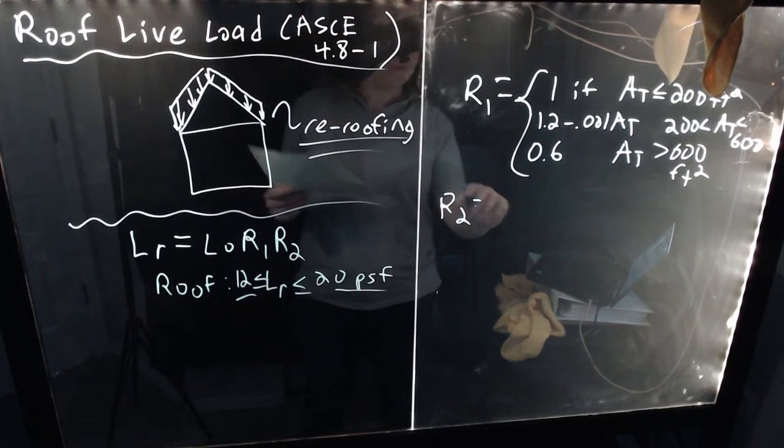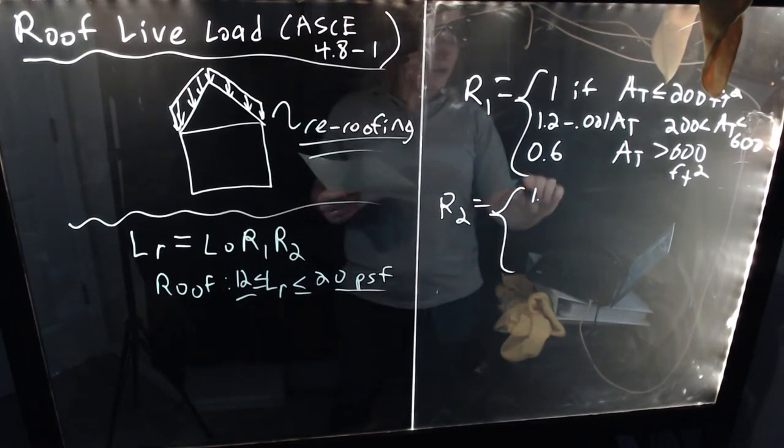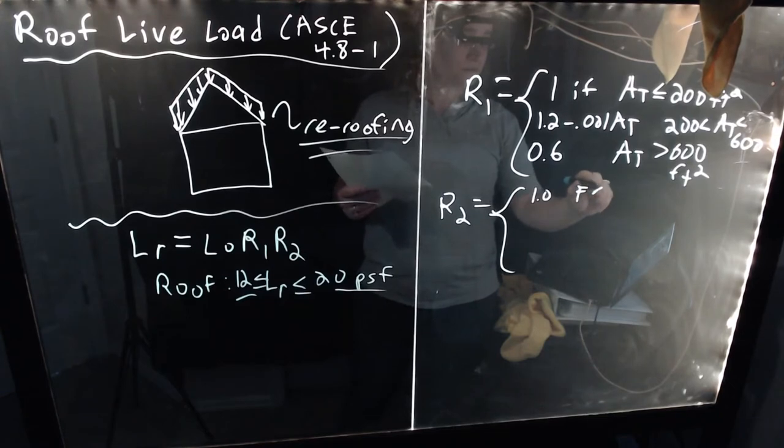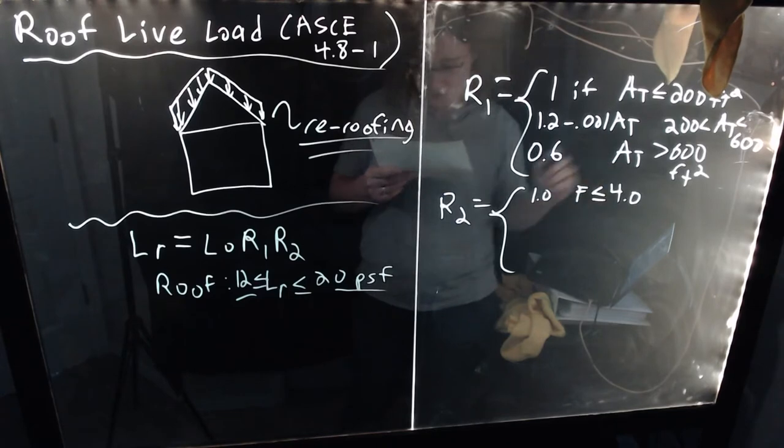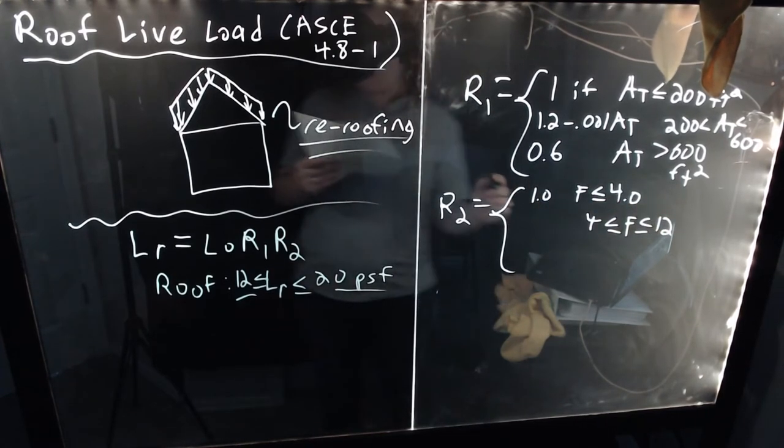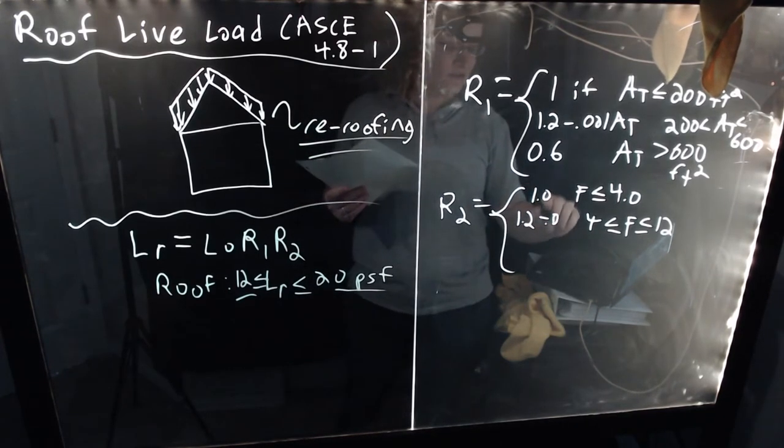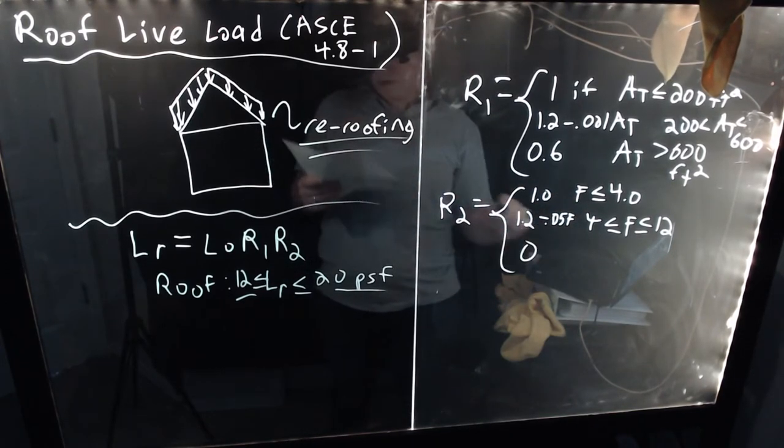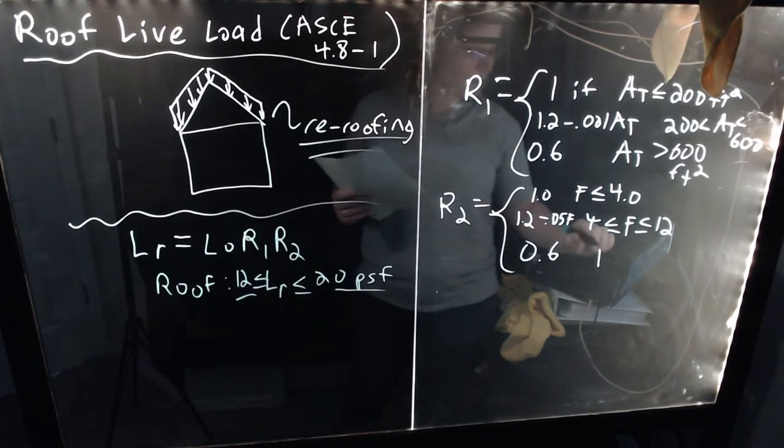Then R2 is just another piecewise function. And it's going to be 1.0 if F, and we will define F, if parameter F is less than 4.0, if F is between 4 and 12, then this will be equal to 1.2 minus 0.05 times F. Or, and then finally, it will be equal to 0.6 if F is greater than or equal to 12, or just greater than 12.